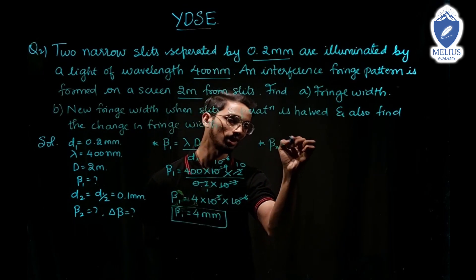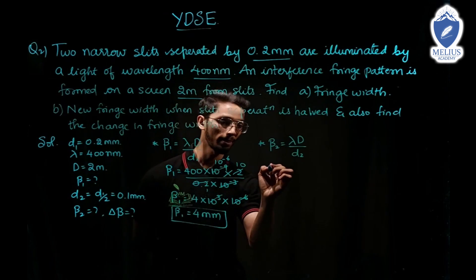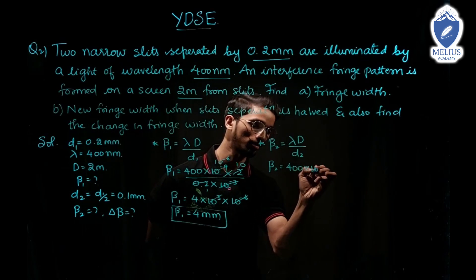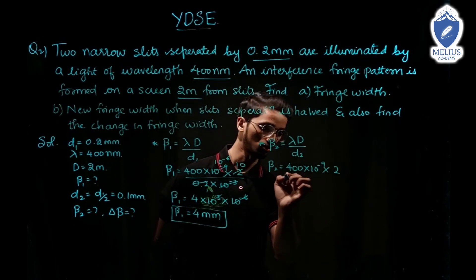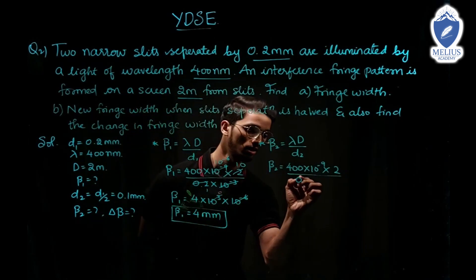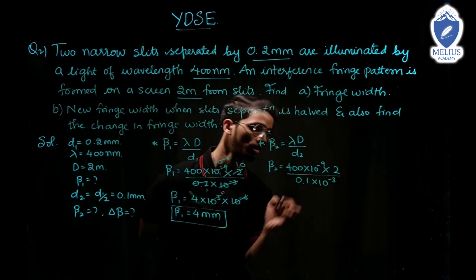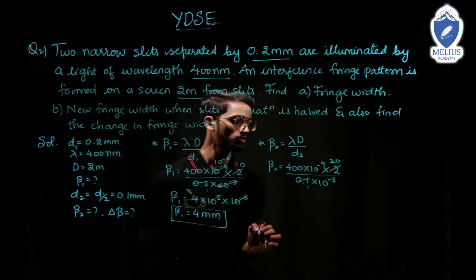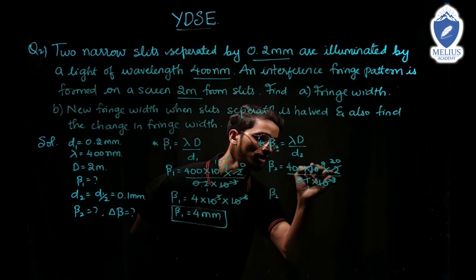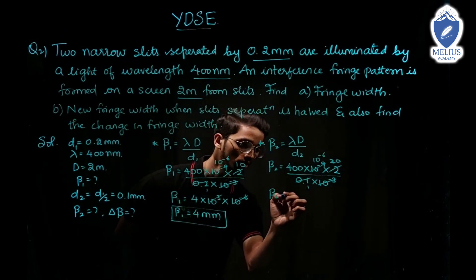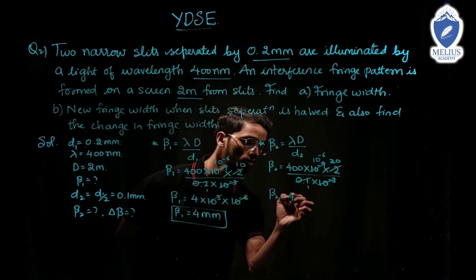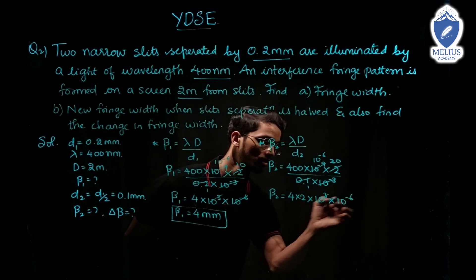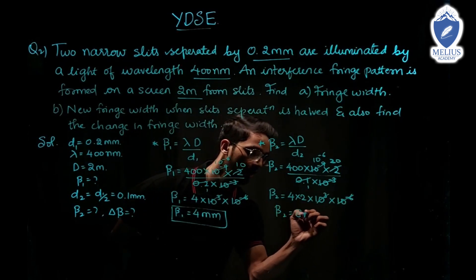Beta 2 equals lambda times D divided by d2. Beta 2 equals 400 into 10⁻⁹ into 2 divided by d2 = 0.1 into 10⁻³. Cancelling gives 10⁻⁶. Then 400 into 2 divided by 0.1 gives 8000, and 8000 into 10⁻⁶ equals 8 into 10⁻³. Therefore beta 2 equals 8 millimeter.